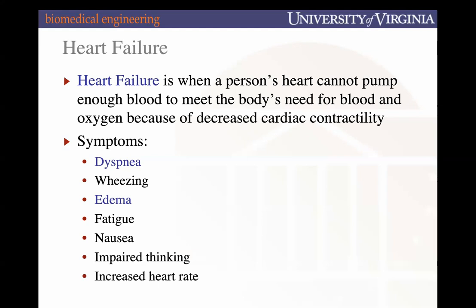The increased heart rate can largely be attributed to the equation for cardiac output from physiology: cardiac output equals stroke volume times heart rate. A compensatory mechanism tries to keep cardiac output the same. If there's decreased contractility, the amount of blood per beat — the stroke volume — goes down, so heart rate goes up to compensate and maintain cardiac output.